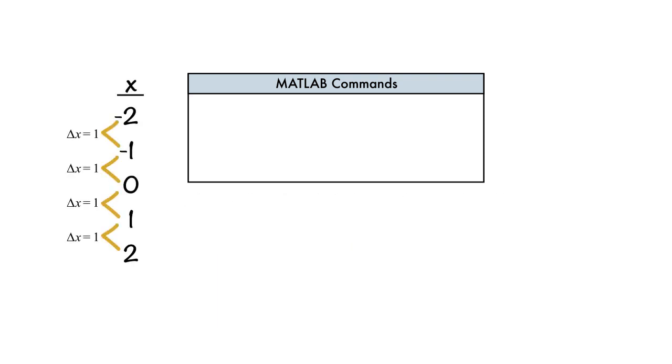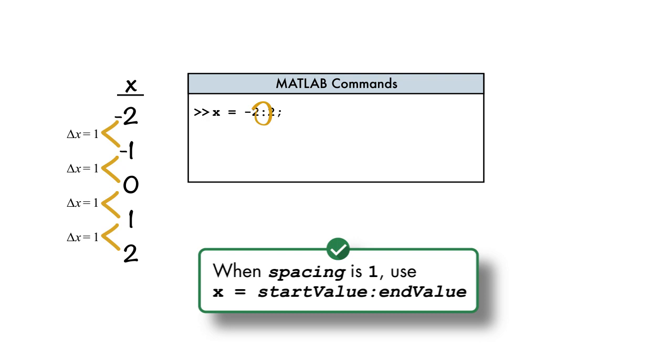Remember that vector where the spacing was 1? A spacing of 1 is so common there's a shortcut for it. We define only the start and end values separated by a colon to create the vector. A spacing of 1 is assumed.